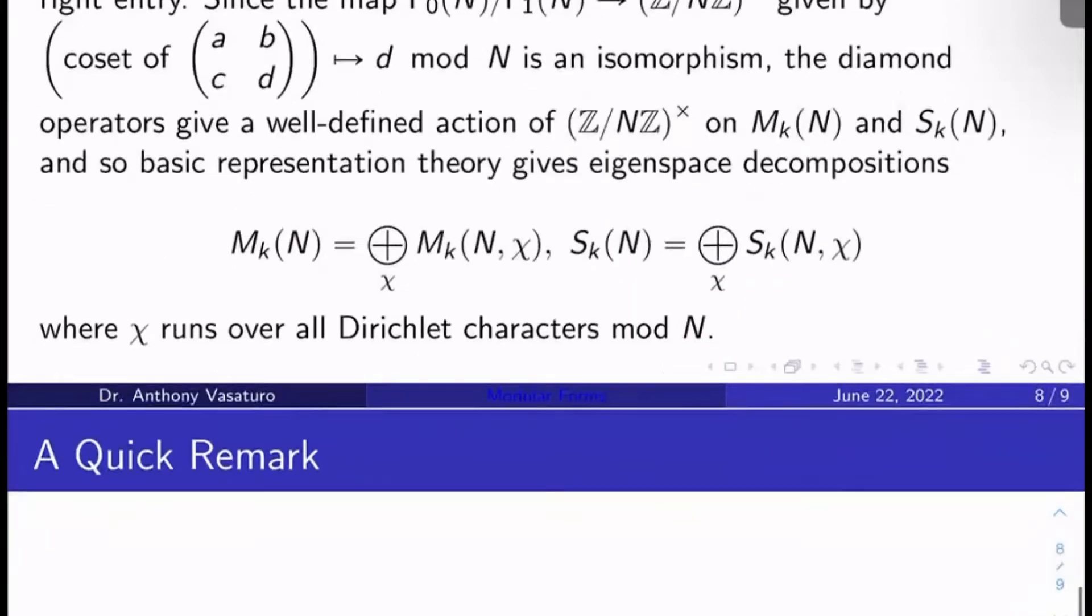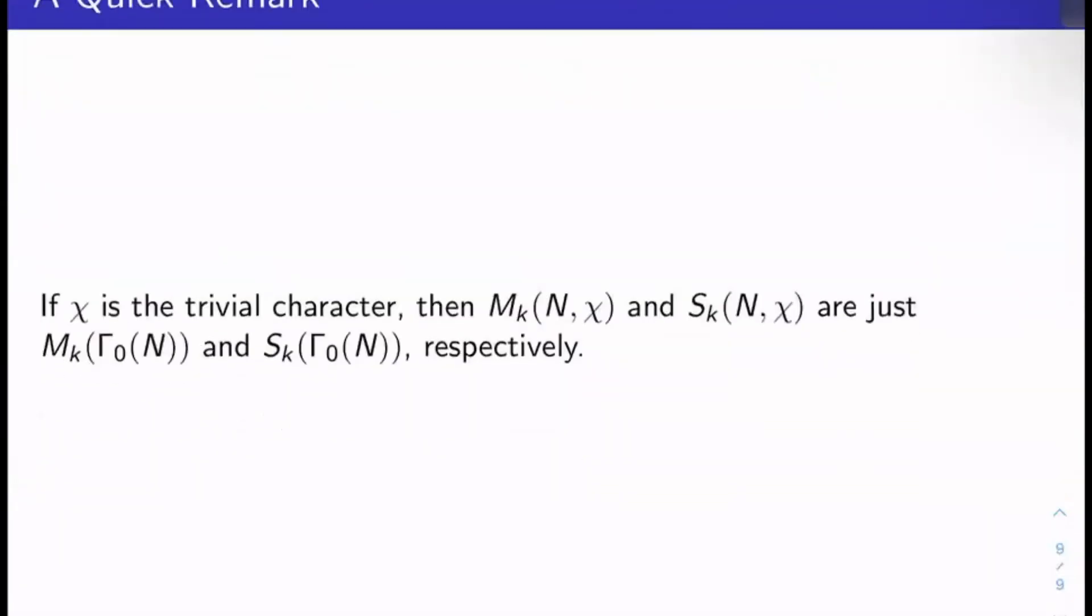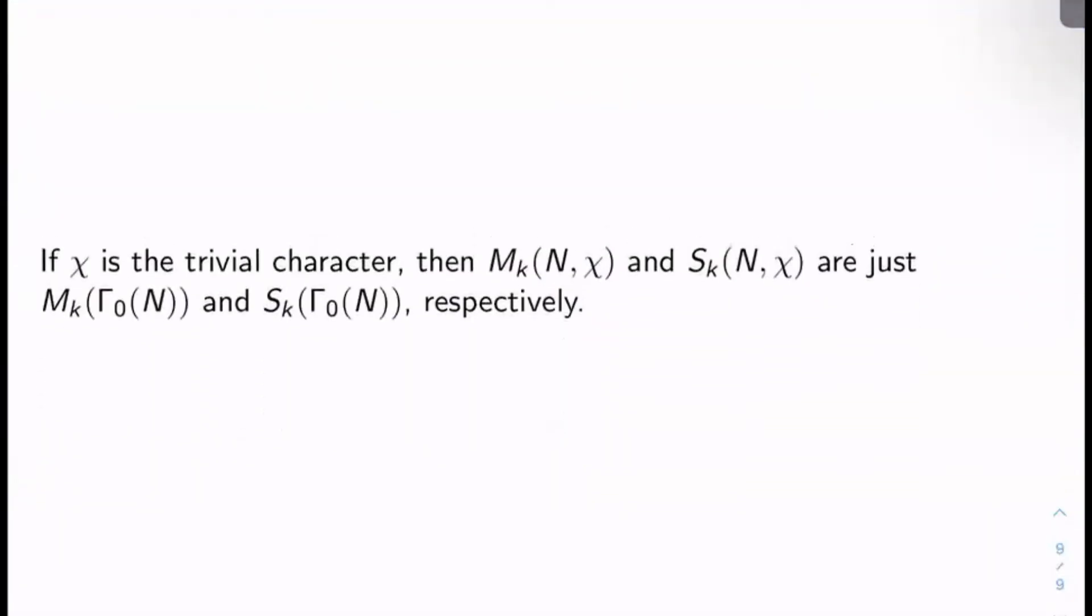Okay. So this is good to know. If I hand you kind of a modular form for Γ_1(N) of weight k, you know, there's going to be some character associated to it. You know, it's going to live in a unique one of these spaces. Okay. And then just as a quick remark, you can check easily if χ is just the trivial character, then M_k(N,χ) and S_k(N,χ) are nothing but M_k(Γ_0(N)) and S_k(Γ_0(N)) respectively. So they're just the full space of modular forms for the congruence subgroup Γ_0(N) or the full space of cusp forms respectively.